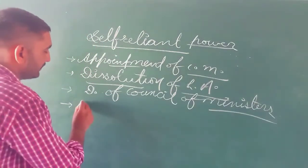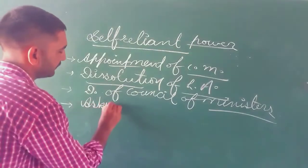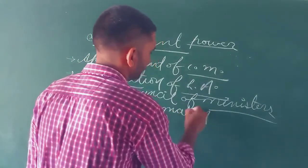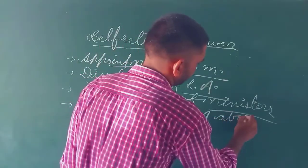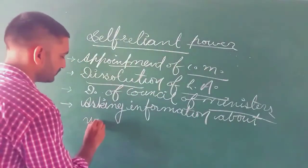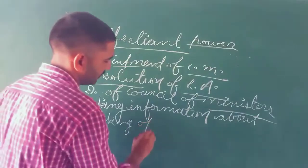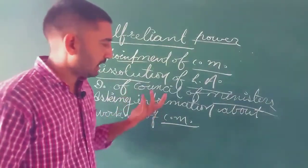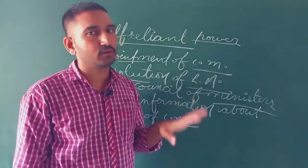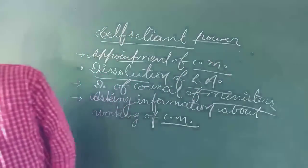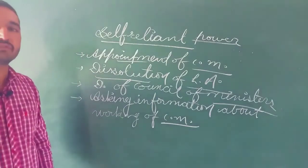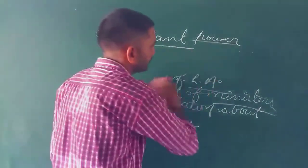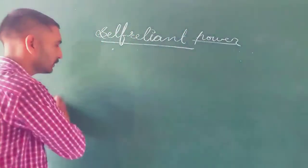Another self-reliant power of the governor is related to asking information about the working of the council of ministers from the chief minister. These are the major powers related with the self-reliant powers of the governor. There are also some other points included under the self-reliant powers of the governor.